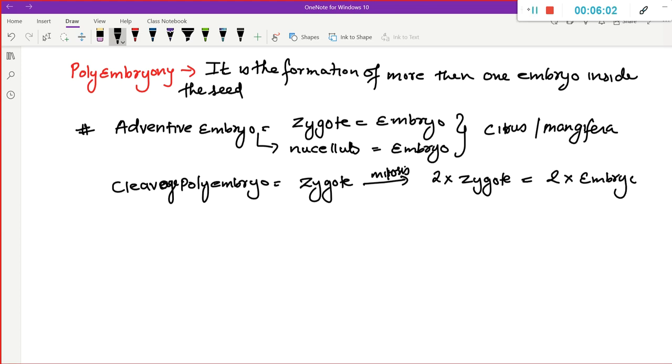This Zygote will undergo mitosis to form two Zygotes and this will form us two embryo. So, if this is taking place, what do we call it? We call it a Cleavage Polyembryony condition. For example, if we are talking about, we see the example of Nicotiana.